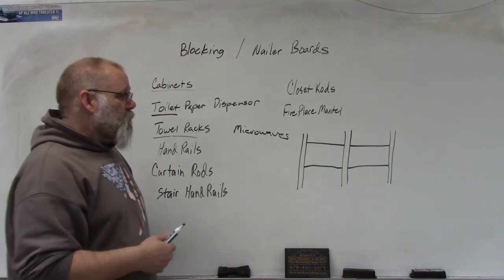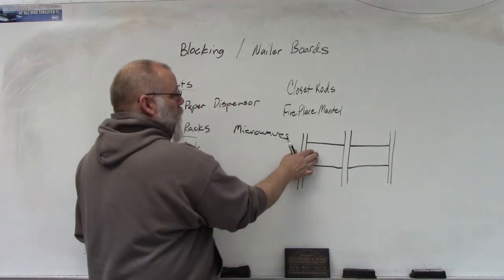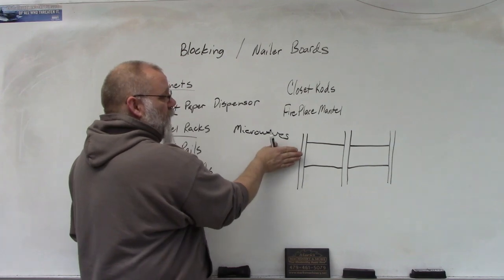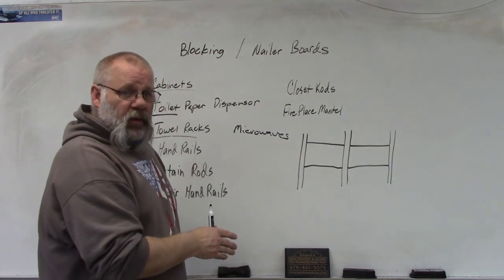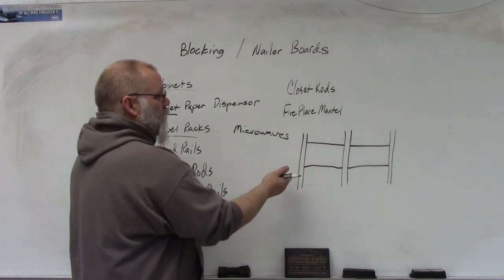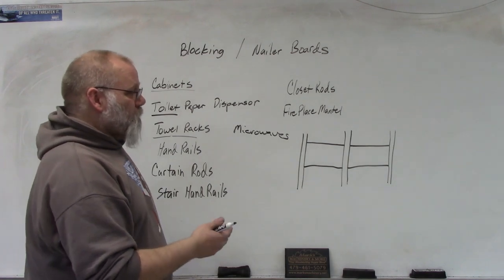Now how do you put blocking in? Here's your studs - stud, stud, stud. So you take your blocking and you turn it the flat direction and you put it flush with the front of the stud. Now you can use whatever you have lying around. If you got a two by six, two by eight, two by tens, two by twelves, it doesn't matter.